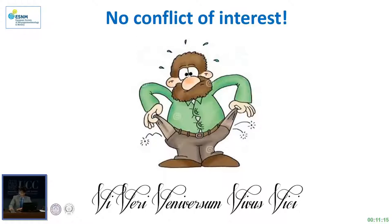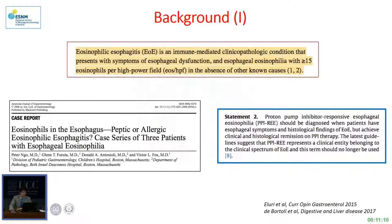We know that eosinophilic esophagitis is an inflammatory condition characterized by esophageal dysfunction and the presence of eosinophilia with 15 or more eosinophils per high power field in the absence of other causes. Recently, we can diagnose another condition known as PPI-responsive esophageal eosinophilia when the patient has clinical and histological remission on PPI therapy.